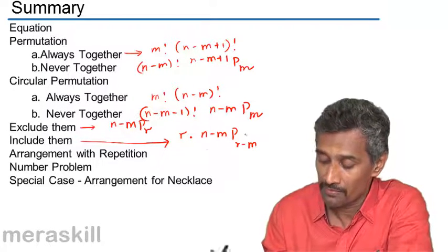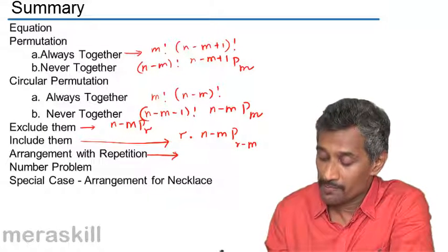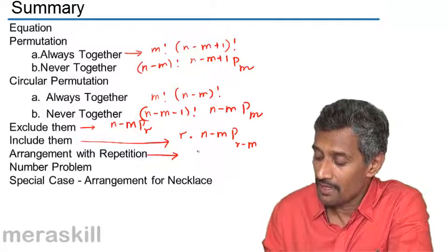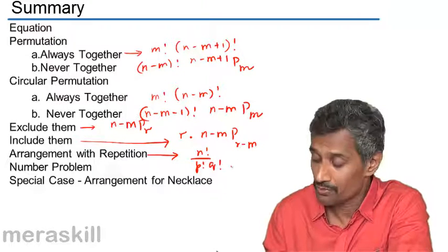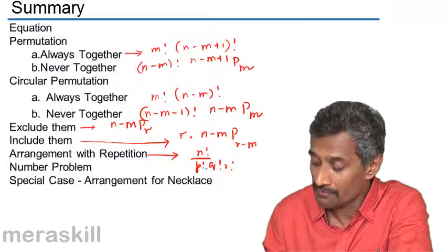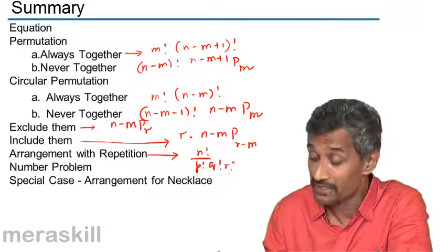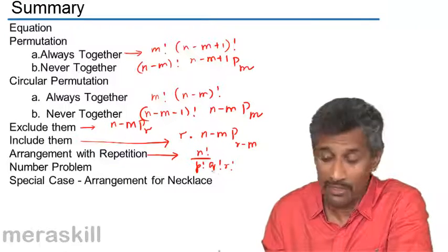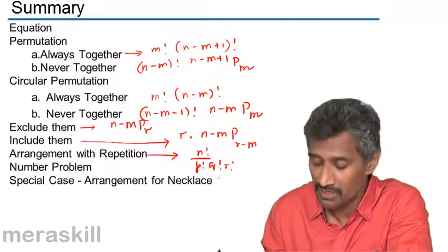So these are the number of arrangements, then we did arrangement with repetition, that is, n factorial upon p factorial upon q factorial upon r factorial, p of them are one kind, q of them identical of another kind, and r of them identical of another kind. And we did what number of problems based on this, quite a number of them, where many or the word problems, in which many digits are repeated.